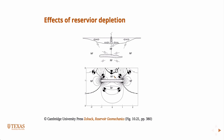The contour lines represent these incremental changes, and you can see that in this region you could promote normal faulting, and in these other regions you could promote reverse faulting due to depletion.